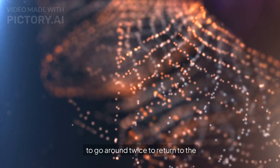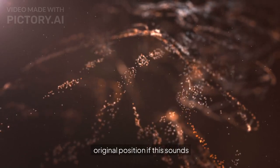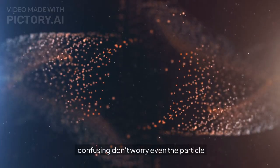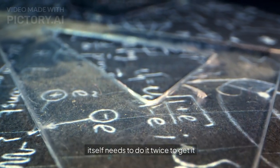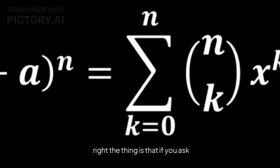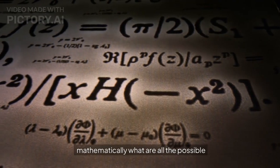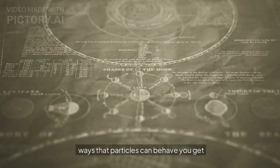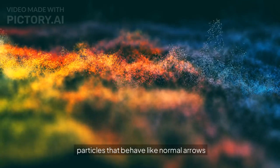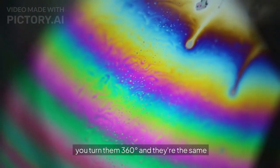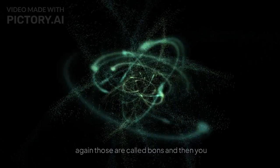You need to go around twice to return to the original position. If this sounds confusing, don't worry. Even the particle itself needs to do it twice to get it right. The thing is that if you ask mathematically, what are all the possible ways that particles can behave, you get particles that behave like normal arrows. You turn them 360 degrees and they're the same again.